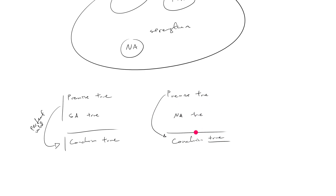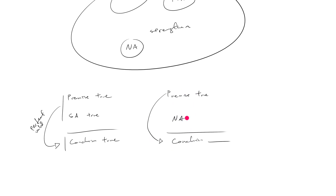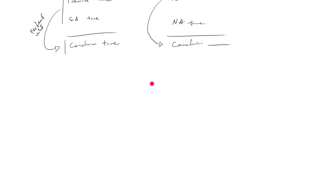There's a big difference between sufficient and necessary assumption, and that difference is in the logical relationship between the argument and the assumption. In sufficient assumption, when the sufficient assumption is true, the argument becomes valid. In necessary assumption questions, it's the other way around — in order for the argument to have a chance of being valid, in order for the premise to support the conclusion, all of your necessary assumptions must be true.